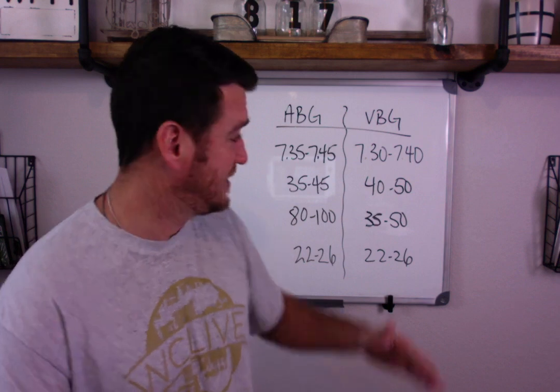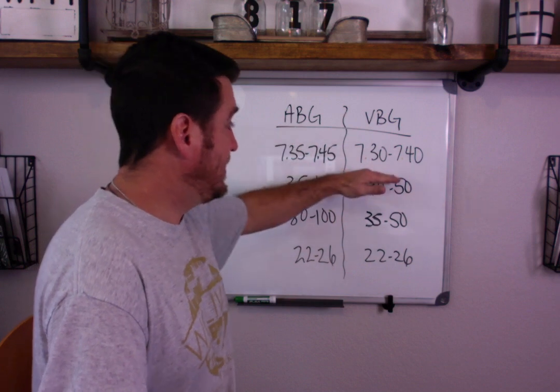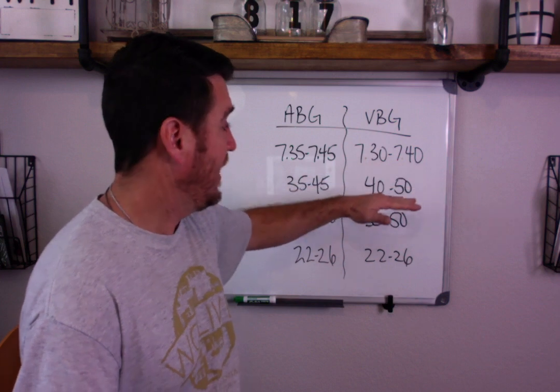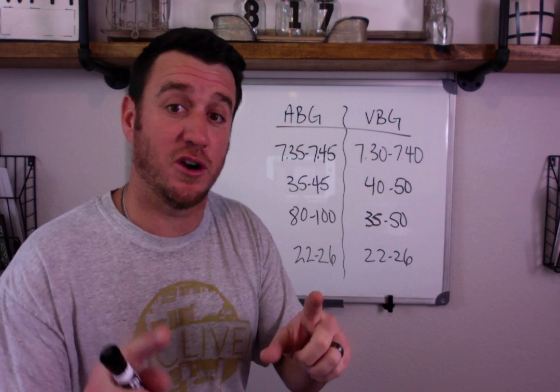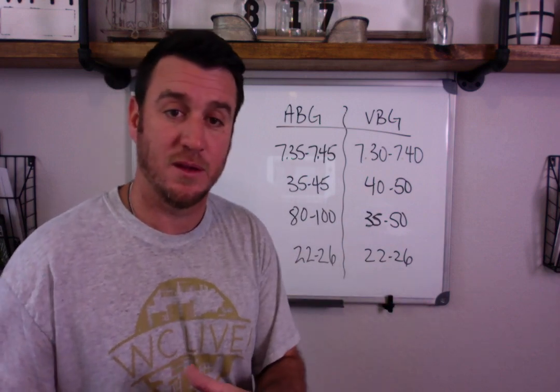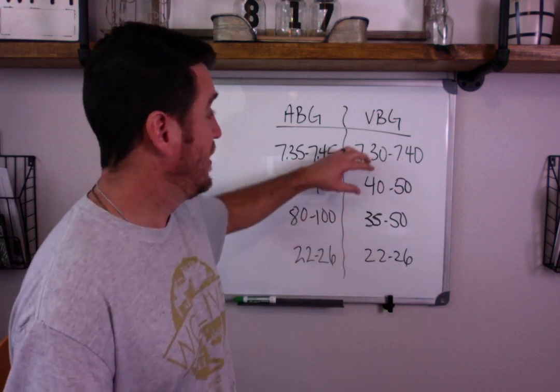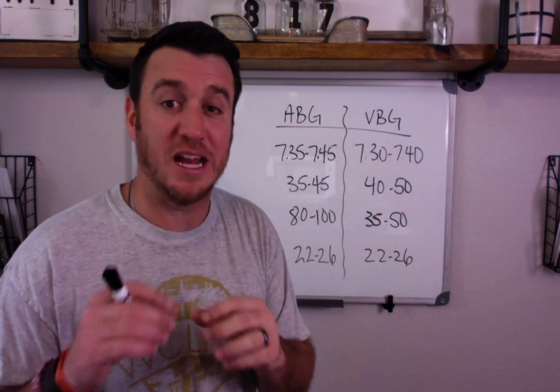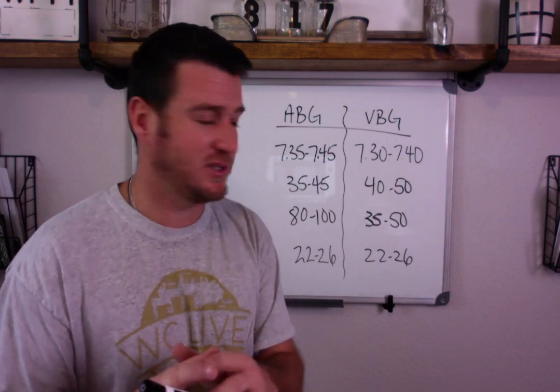That's the biggest thing to understand here is that from a pH and a CO2 standpoint, venous compared to arterial, your venous blood is going to be slightly more acidotic and have slightly more CO2. The bicarb is also essentially the same.